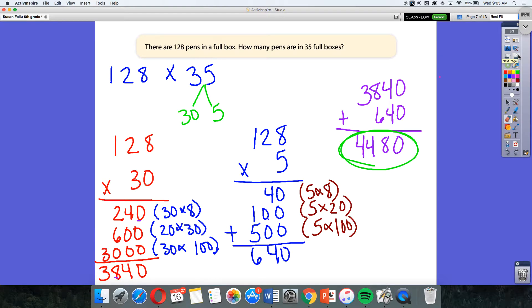You also probably used partial products as well. In partial products, you left 128 together, but you broke apart that 35 into 30 and 5. So, I did one multiplication problem with 128 times 5. And then I did another one with 30, adding those partial products together, again, to get 4,480.